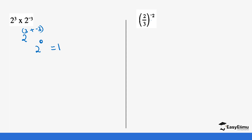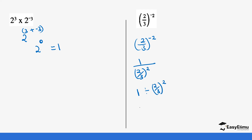Now if you look at this fraction — two over three to the power negative two — you can choose to separate the numerator and denominator, or work on it as a whole as one base. If you work on it as one base, this becomes one over (two over three) power two. This means it's one divided by (two over three) power two, which is the same as one times three over two, all to the power two. That gives us three over two squared, which is nine over four.